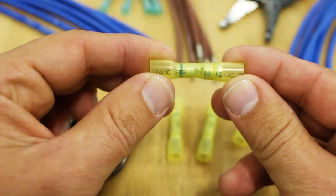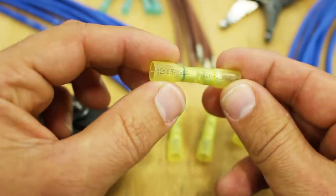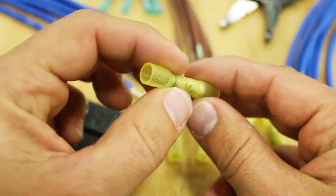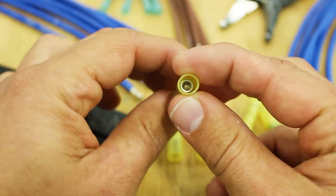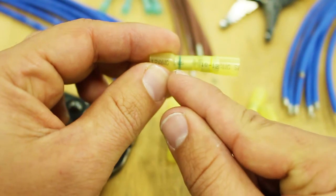Step-down butt splices are used to connect different gauge wires together or multiple wires of the same size. So you could connect a 10-gauge wire to a 12-gauge wire or connect a 12-gauge wire to two 12-gauge wires. The color banding on the outside indicates which wire it will accept.